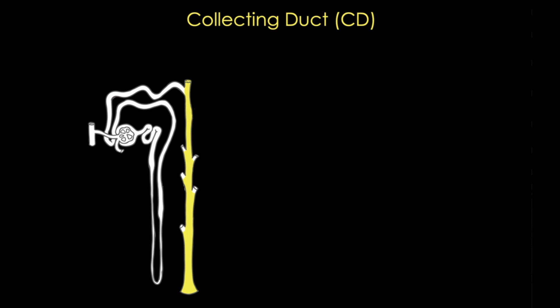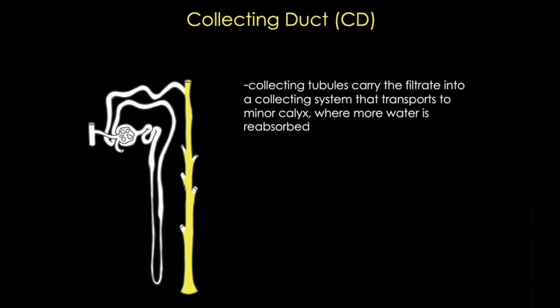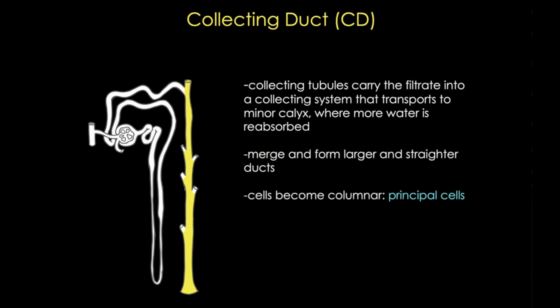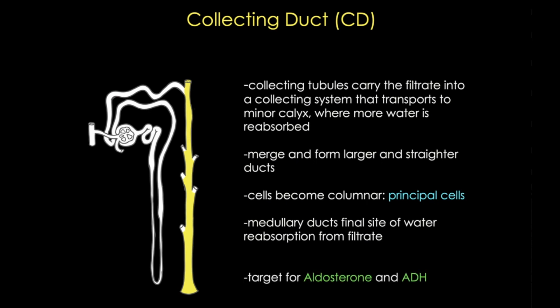Moving on to the collecting tubules — these tubules carry the filtrate into collecting ducts, formed by the merging of tubules, so they often have branches. They become larger and straighter the deeper you go into the medulla. The ductal epithelial cells also change, becoming columnar, and are termed principal cells. The collecting ducts of the medulla will be the final sites of water reabsorption from the filtrate — the final concentration of the urine. The ductal cells are regulated by both aldosterone and ADH.